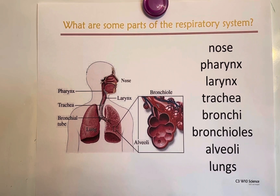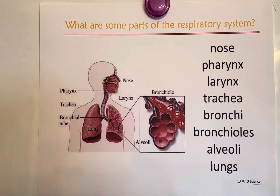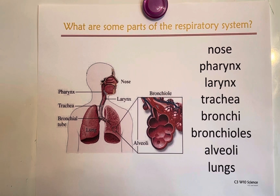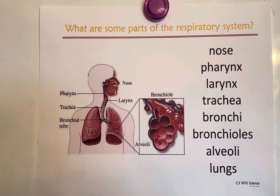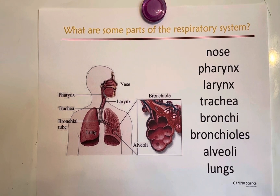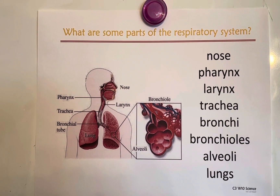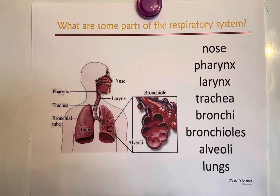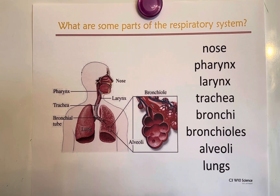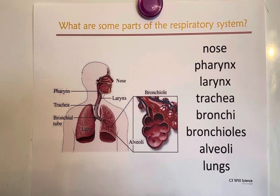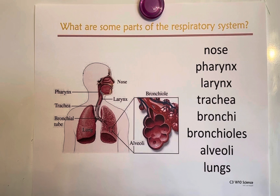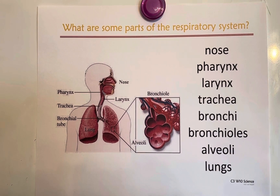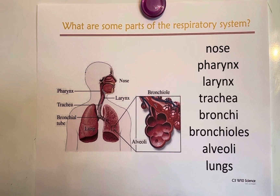What are some parts of the respiratory system? Some parts of the respiratory system are nose, pharynx, larynx, trachea, bronchi, bronchioles, alveoli, and lungs.